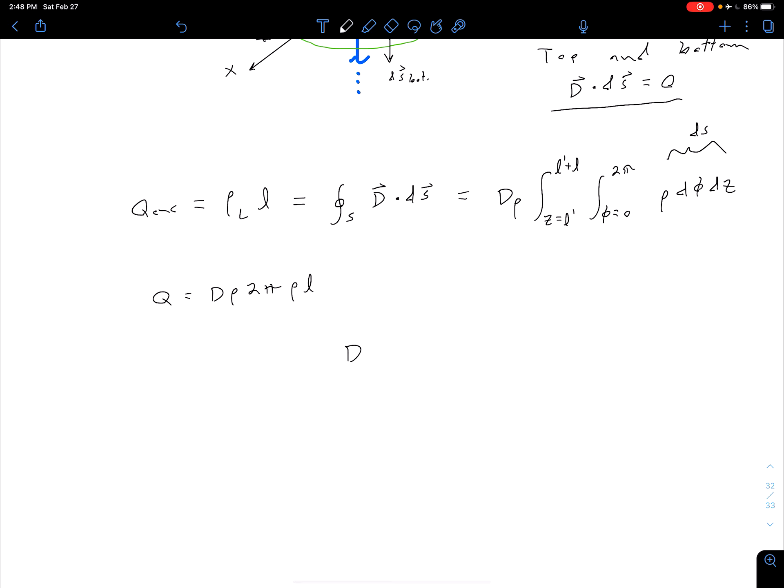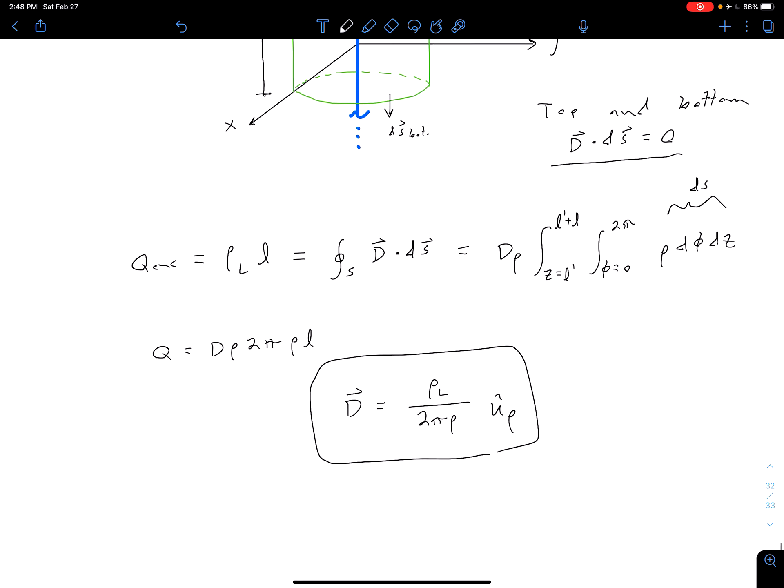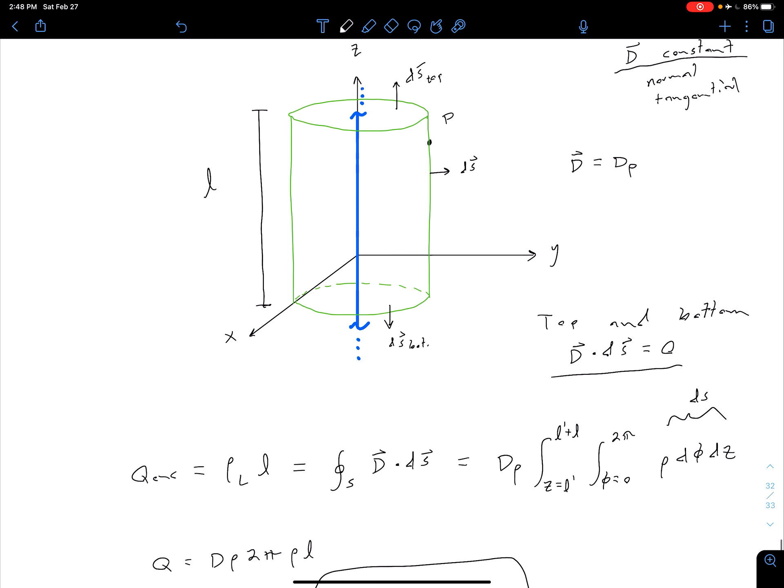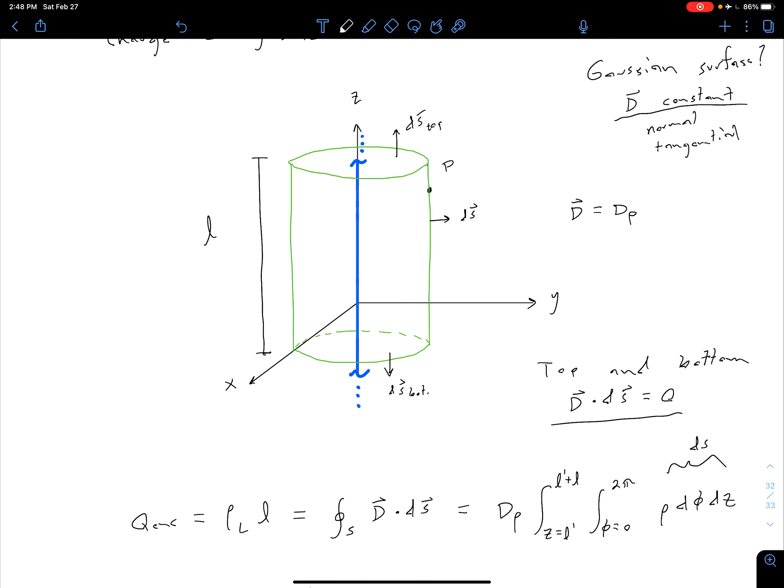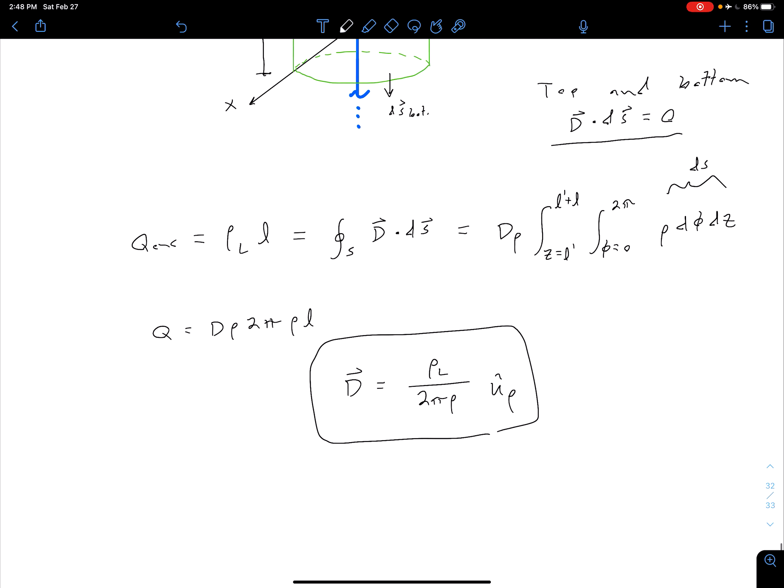All right, and then from there, we can say that our D is equal to rho l divided by 2 pi rho in our rho direction. And again, remember that this rho direction and this rho distance can be locally defined. So with how we've defined this infinite line charge along the z-axis, it actually corresponds to our rho for our cylindrical coordinates. But in general, that's just the perpendicular distance, or the perpendicular direction, from our line charge.